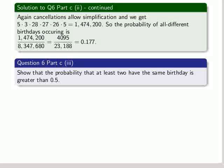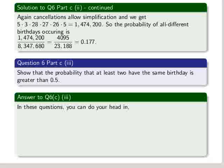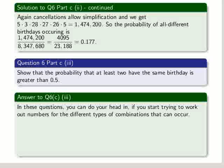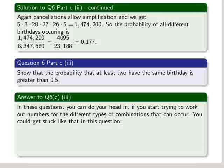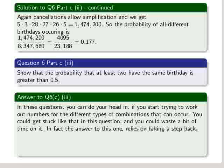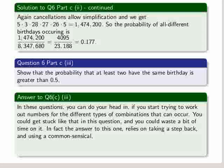Okay, now, last part. Show the probability that at least 2 have the same birthday is greater than 0.5. In other words, that there's better than even chances that 2 of those 7 people will share, 2 or more of those 7 people will share a birthday in the month of June. Okay, you can do your head in if you start trying to work out numbers for the different types of combinations that occur. In other words, 3 people coinciding, 4 people coinciding, etc. Now, you could get stuck in this question and waste a bit of time on it. In fact, the answer to this one relies on taking a step back and using a commonsensical rather than a mathematical approach.